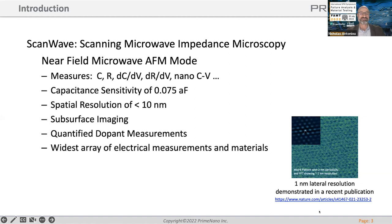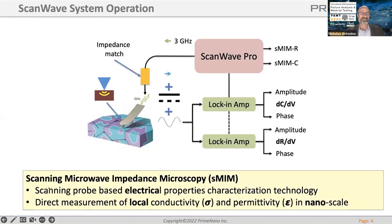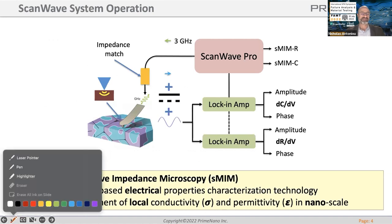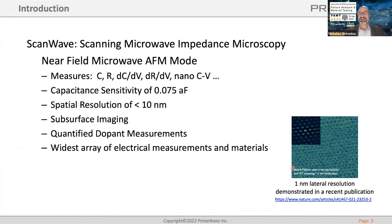Our spatial resolution is typically about 10 nanometers, but here is an image of bilayer graphene which under ideal conditions gave a resolution of about 1 nanometer lateral — so we know we can get sub-tip-radius resolution. The microwaves allow us to go subsurface and image features underneath the top surface, a couple hundred nanometers deep. The latest development is quantifying doping levels in semiconductors, and we can do quite an array of electrical measurements across material types.